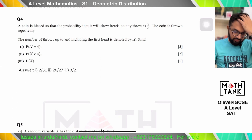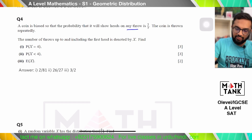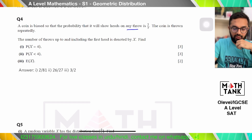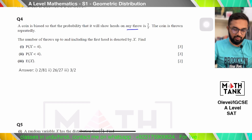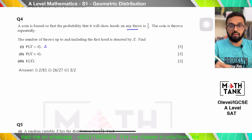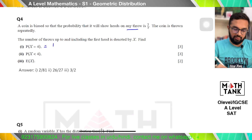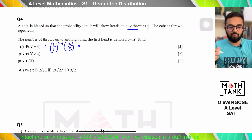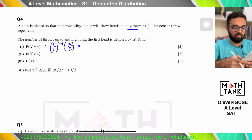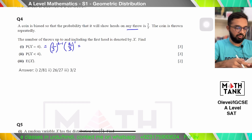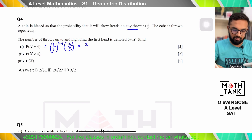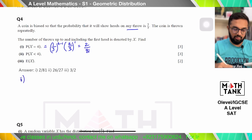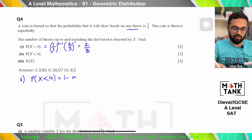Moving on to question 4. A coin is biased so that the probability of heads on any throw is 2/3. The coin is thrown repeatedly. The number of throws up to and including the first head is denoted by X. Find P(X = 4): that is (1/3)^(4−1) × (2/3). P(X < 4) is 1 − q^(r−1).